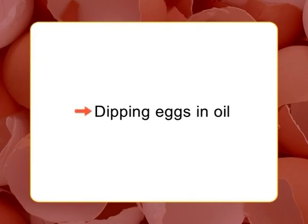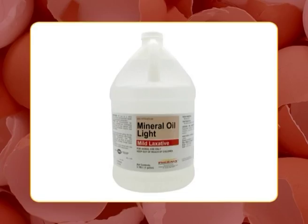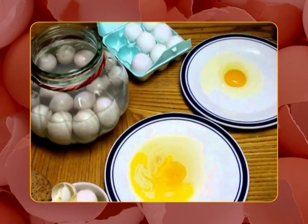Store unwashed eggs towards the bottom of the refrigerator, away from the door, to avoid warm air from frequent openings. Dipping eggs in oil is a very satisfactory method. The oil should be free from odor but does not need to be colorless; a light-grade mineral oil is recommended. Oil-preserved eggs, like water-glassed eggs, have the advantage of allowing eggs to be kept in cartons or cases.